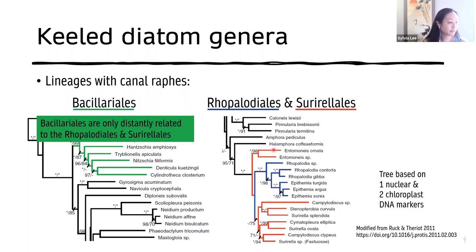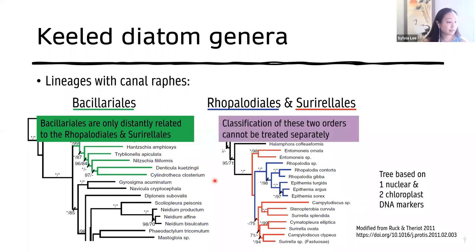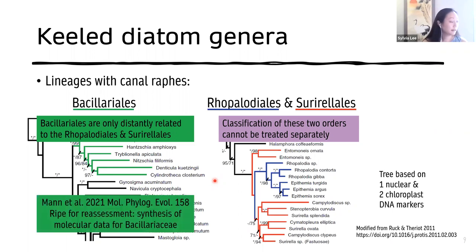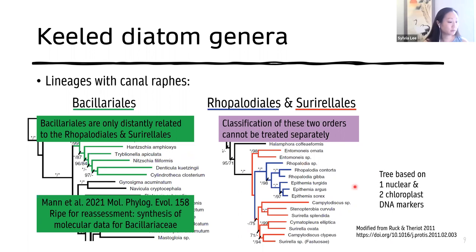In this tree, the Rhopalodiales are firmly nested within the Surirelloid diatoms. A take-home from this is that treatment in the classification of these two orders cannot be done separately — you'll have to look at them together. Recent work from Mann et al. took what was available in terms of molecular data for the Bacillariophyceae and started the process of reassessing the classification of this group. Later in the talk we'll go further into work by Elizabeth Ruck and colleagues on the other groups.